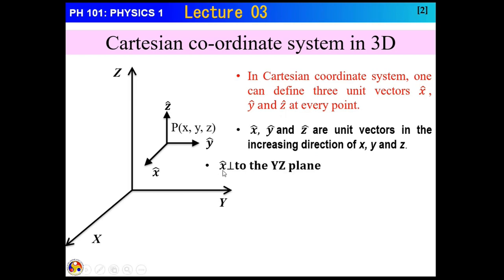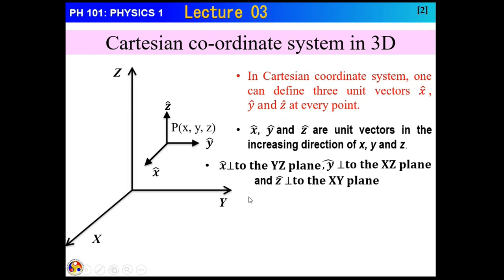The unit vector along x direction will be perpendicular to the y-z plane. Remember, for two-dimension, we said that the unit vector will be perpendicular to a line, but here in three-dimension, the unit vector will be perpendicular to a plane. Unit vector along y direction will be perpendicular to the x-z plane. Unit vector along z will be perpendicular to the x-y plane.